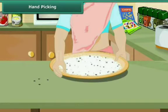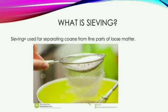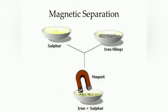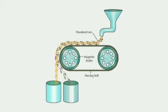Then we have hand picking. You would have seen in a house where from the rice they just pick up the stones and throw them away — that is hand picking. Then we have sieving, which uses a sieve with small holes for the separation of fine particles. Then we have magnetic separation, wherein we separate magnetic material like iron filings from a mixture. The powdered iron ore is allowed to move through a conveyor belt and a magnetic roller separates the iron ore.